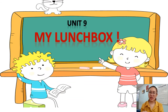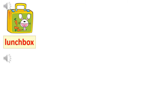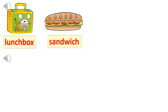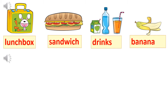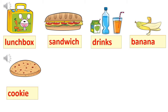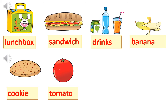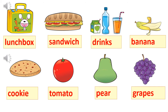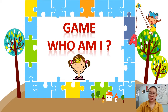In Unit 9, 'My Lunch Box', we study about food. I hope you can tell me what food we studied. Let's see: lunch box, sandwich, drinks, banana, cookie, tomato, pear, and grapes. Now, to make sure you can remember all the food, let's play a game — 'Who Am I?'